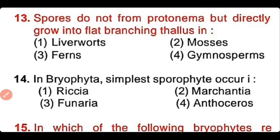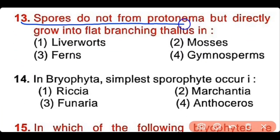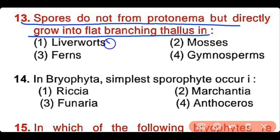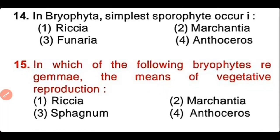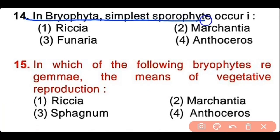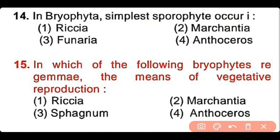Question number 13: The spores do not form protonema but directly grow into a flat branching thallus in liverworts, mosses, ferns, or gymnosperms. The correct answer is option 1 — in liverworts, the protonema stage is not formed. Question number 14: In Bryophyta, the simplest sporophyte occurs in Riccia, Marchantia, Funeria, or Anthoceros. The correct answer is option 1. Riccia has the simplest sporophyte among all bryophytes.